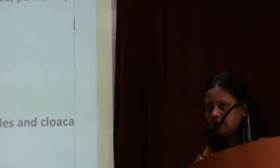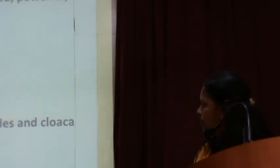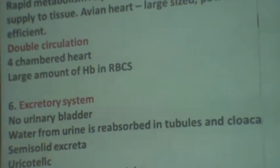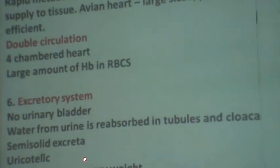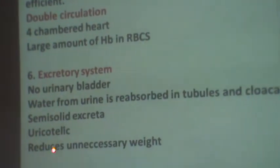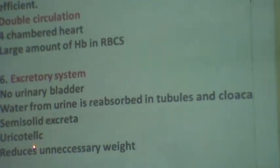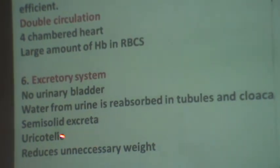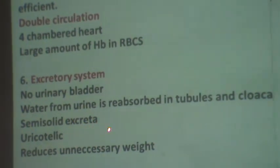In the excretory system of birds, the urinary bladder is completely absent — storing urine would add weight. Birds secrete semi-solid urine. They are uricotelic, meaning they excrete uric acid, which requires less water for excretion, resulting in semi-solid excreta. No urinary bladder, uricotelic excretion, and semi-solid excreta all reduce unnecessary weight.